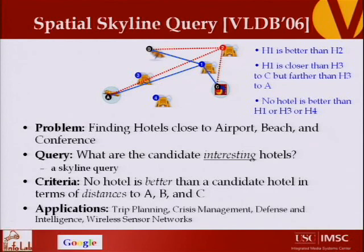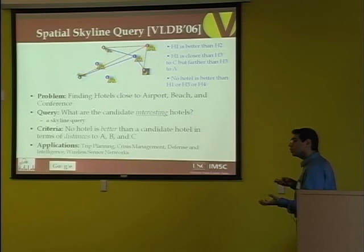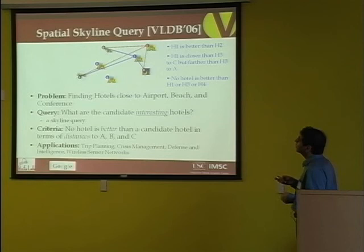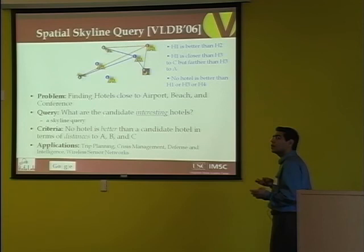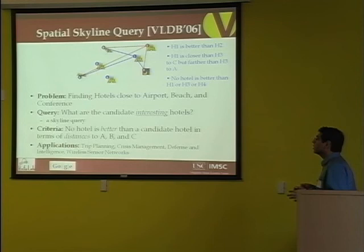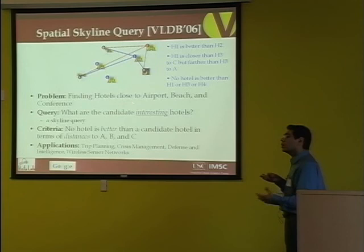We call this a spatial skyline query. It looks for the location of hotels which form a candidate set from which you want to find a hotel. Hotel two is not in the candidate set; hotels one, three, and four are, because there is no hotel better than three or four in terms of all distances. The query finds hotels close to airport, beach, and conference, where the criterion is that no hotel should be better than a candidate hotel in all distances to A, B, and C. It has applications in trip planning and wireless sensor networks. We published this paper at VLDB 2006.